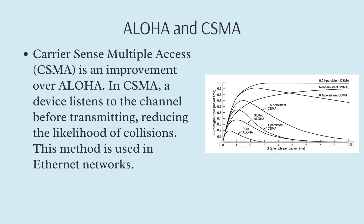Carrier Sense Multiple Access, or CSMA, is an improvement over Aloha. In CSMA, a device listens to the channel before transmitting to ensure it's not already in use. This method significantly reduces the likelihood of collisions. CSMA is widely used in Ethernet networks, demonstrating its effectiveness in reducing network congestion. By listening before transmitting, CSMA minimizes the chances of two devices transmitting simultaneously, thereby enhancing overall network efficiency.